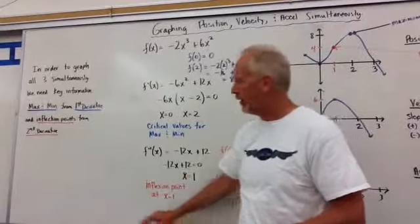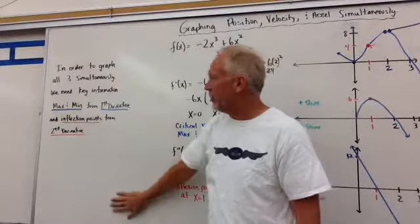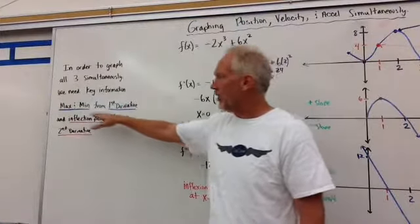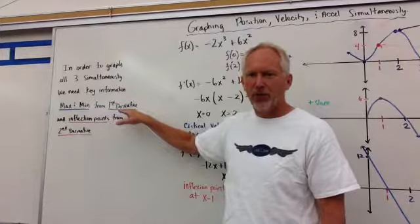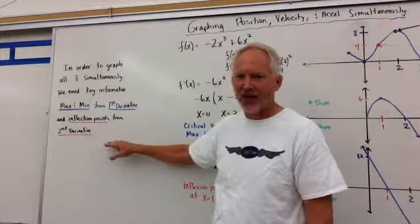So what we're looking to do here is, in order to graph all three simultaneously, we need some very important information, some key information. And that is we need the max and min from the first derivative, and we need any points of inflection we might get from the second derivative.